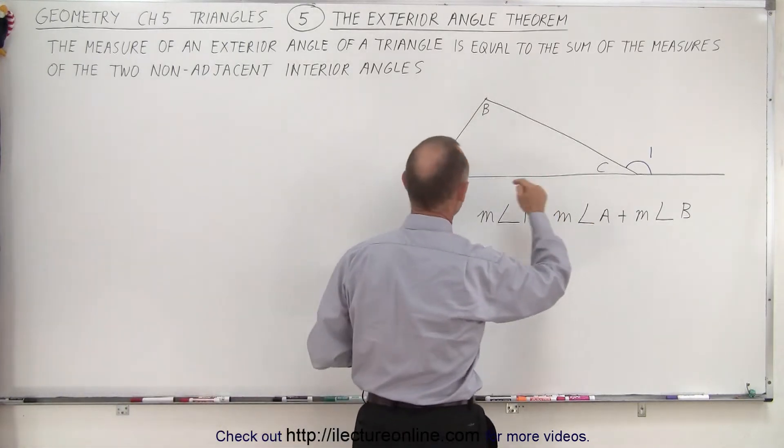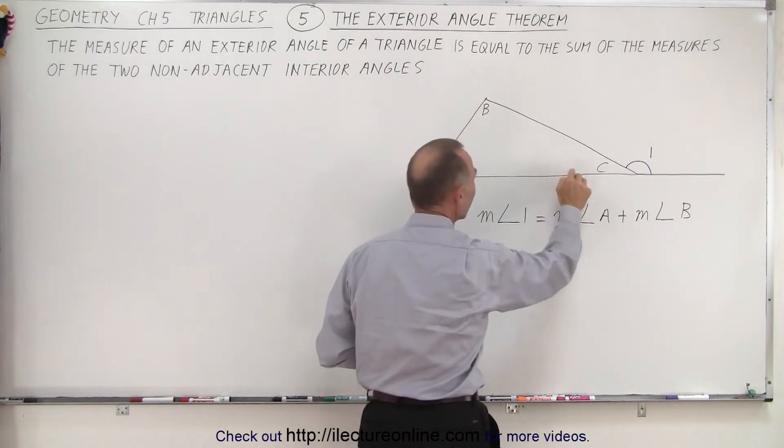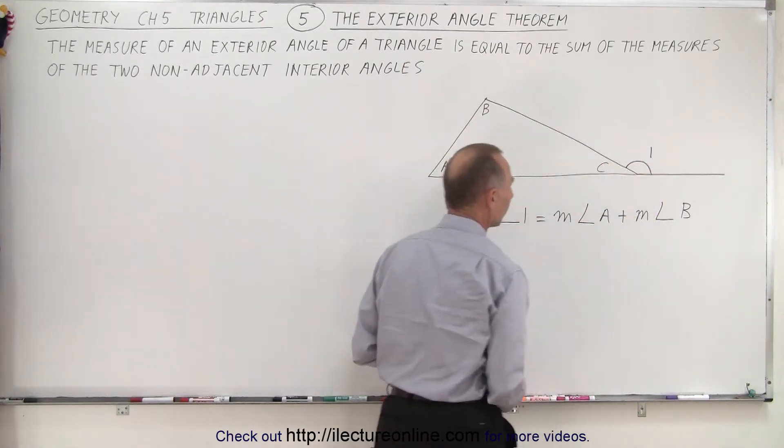Well, here we have a triangle with the three interior angles A, B, and C, and the one exterior angle right here, numbered 1.